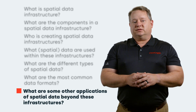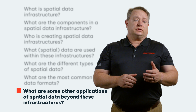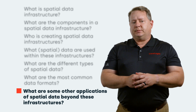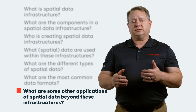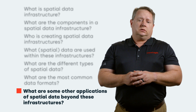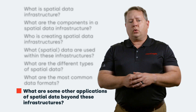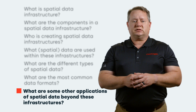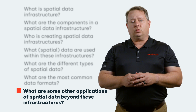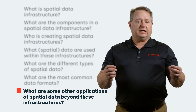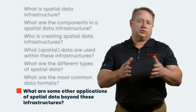What are some other applications of spatial data beyond these infrastructures? First, there's mapping — visualizing geospatial data to allow humans to perceive potential relationships between features. Telematics: monitoring vehicles using GPS and onboard diagnostics to plot asset movements. Routing: determining the most efficient route from an origination to a destination based on the mode of transport and the ground features in between.